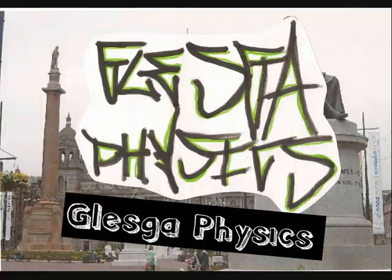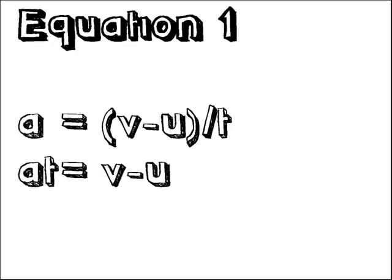Equation 1 is rearranged for acceleration. a equals v minus u over t to give you v equals u plus at. Done.